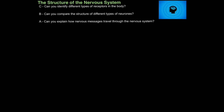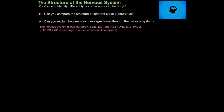What does the nervous system actually do? Our nervous system allows our body to detect and respond to stimuli. Stimuli is plural for the word stimulus, and a stimulus is a change in our environmental conditions, for example, whether it gets hotter or brighter. There are cells in our body that have evolved to detect such changes, and we call these cells receptor cells. These receptor cells can be found in specific organs we call receptor organs. So, receptors are cells that detect stimuli.